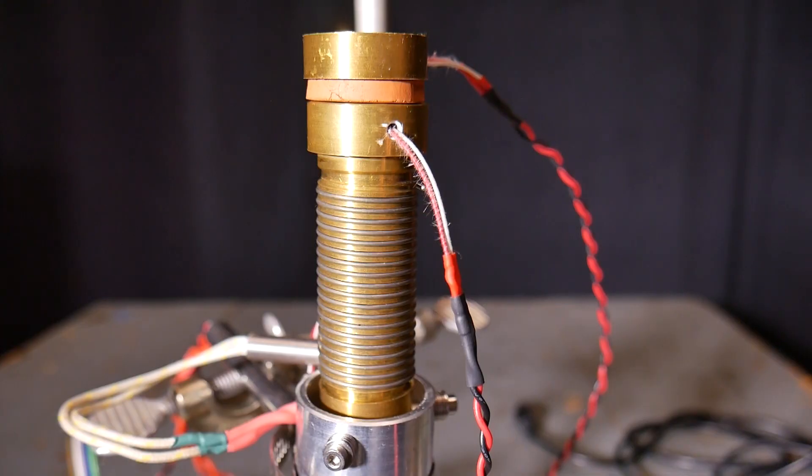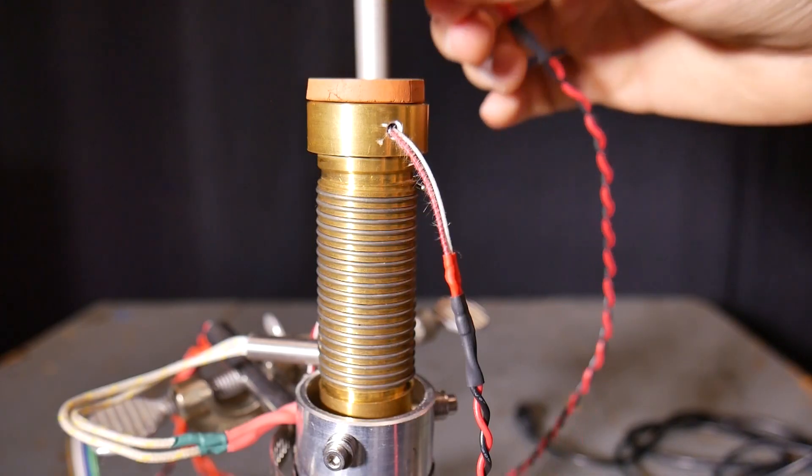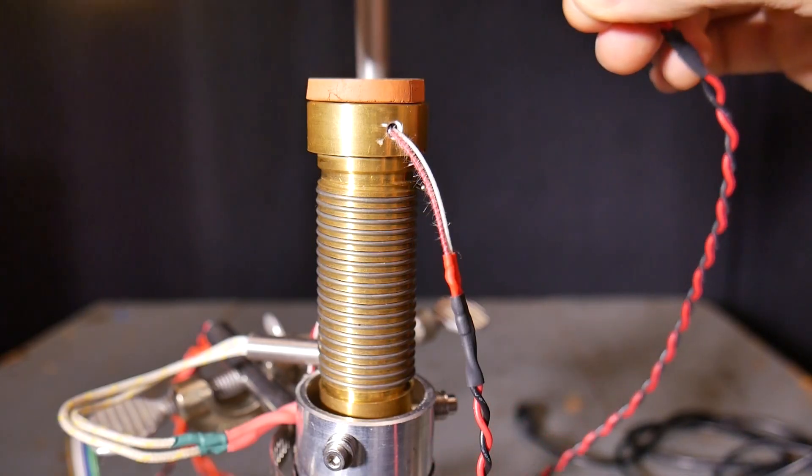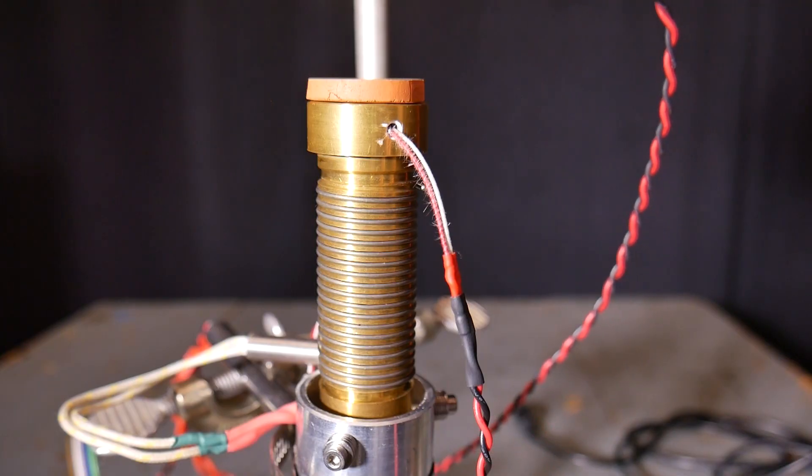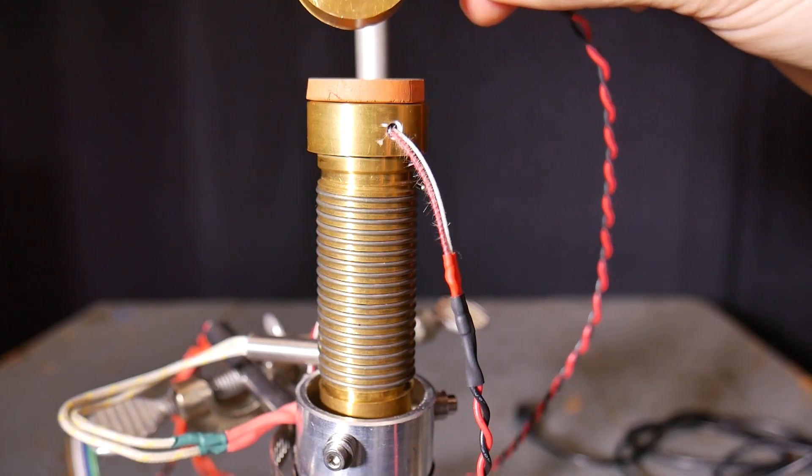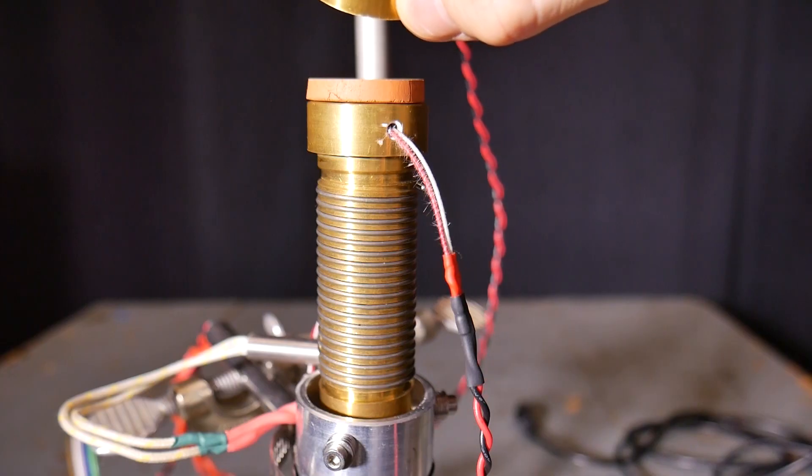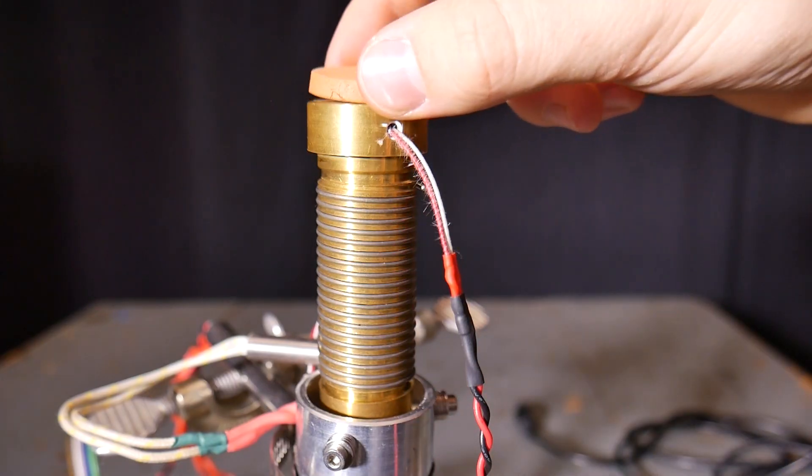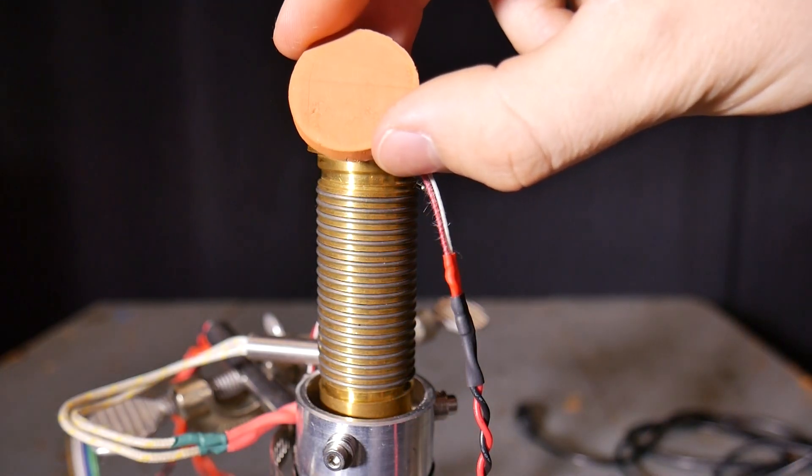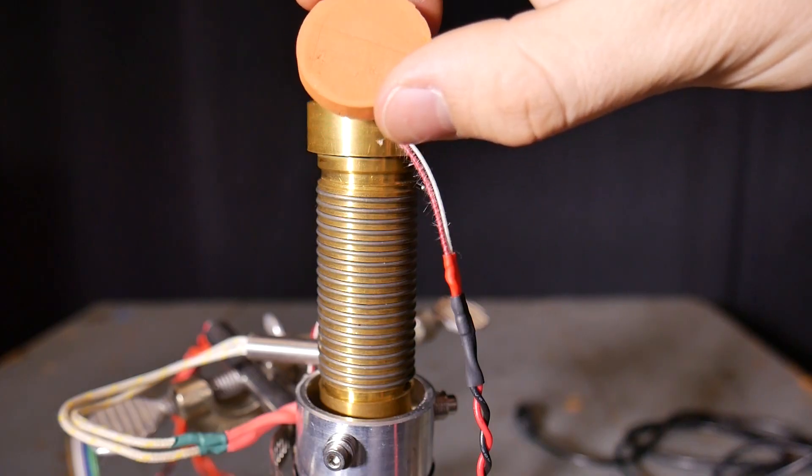This is the actual measurement section of my device. This is the top brass disk. It has an embedded thermal probe inside. This probe goes all the way to the very middle. It can give very accurate readings of this brass disk temperature. I have my material that I'm measuring. This is fired red ball clay.